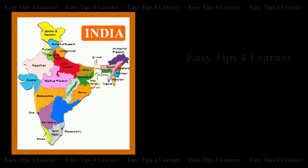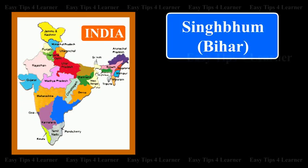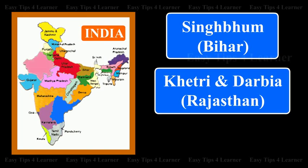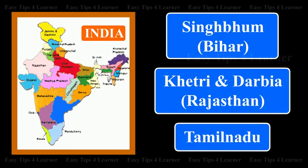In India, copper is mainly found in Singbhum, Bihar; Khetri and Dariba, Rajasthan; and in Tamil Nadu.